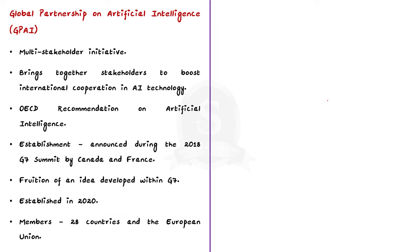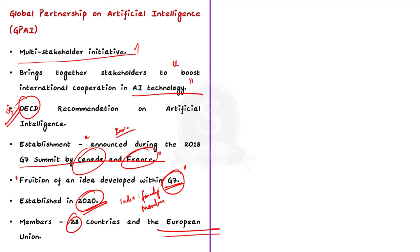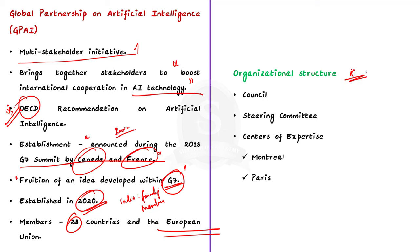GPAI is a multi-stakeholder initiative that brings together experts from science, industry, civil society, government, and international organizations to boost international cooperation in artificial intelligence technology. This initiative was framed as per the OECD recommendation on artificial intelligence. Its establishment was announced during the 2018 G7 summit by Canada and France, and it is often described as the fruition of an idea developed within the G7 nations. The initiative was finally launched in 2020, when there were only 15 members — India was one of the founding members. Currently, the GPAI membership has expanded to 28 member countries and the European Union. In terms of organizational structure, GPAI has a council, steering committee, and two centers of expertise located in Montreal and Paris.